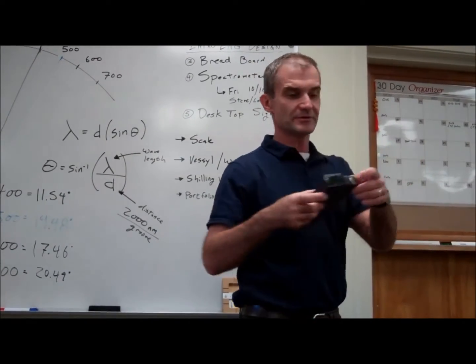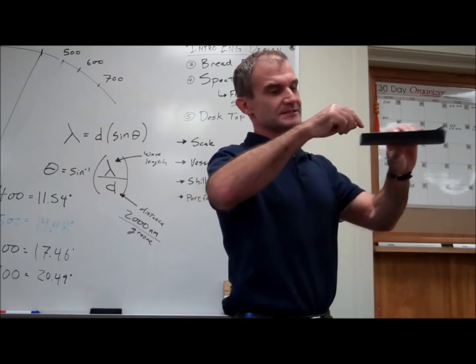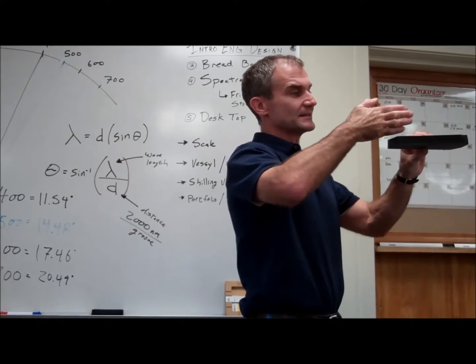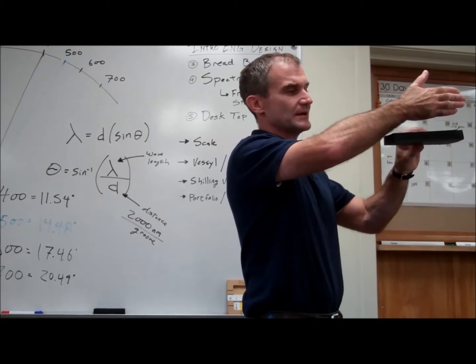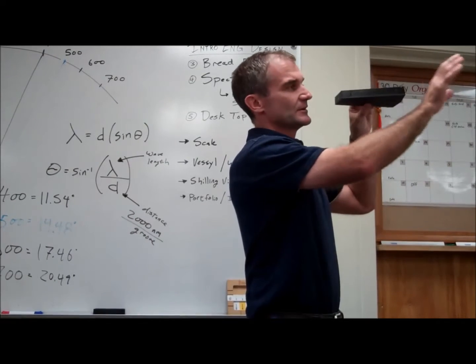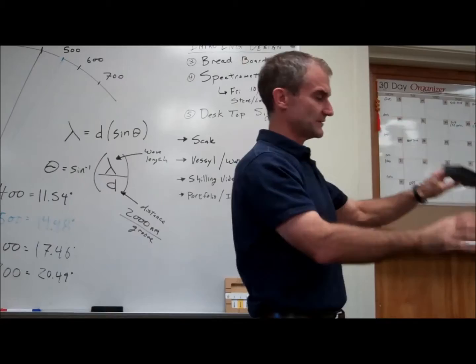The light comes in through this slot, hits that diffraction grid, diffracts, and then bounces off at an angle this way. When you look through here you're looking at a scale on the right side of the spectrometer.